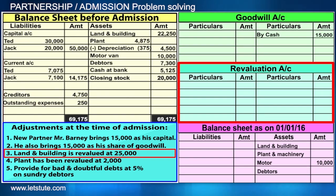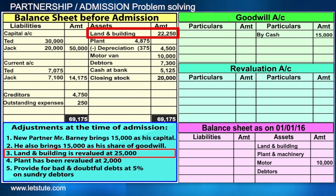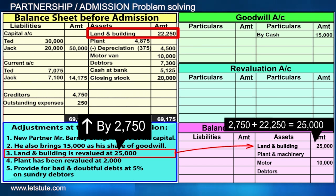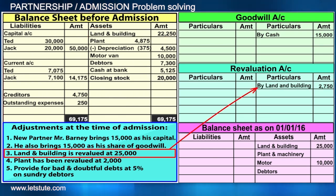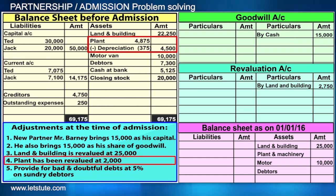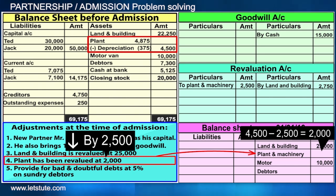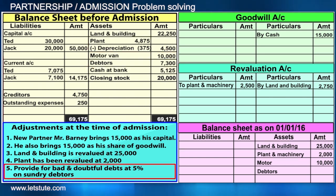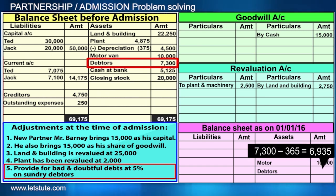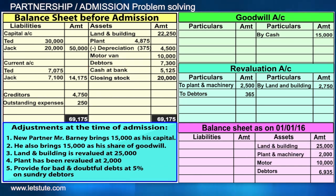Next, revaluation of assets and liabilities is done by opening a revaluation account. Land and building has been revalued — when asset value increases, we add it to the asset in the balance sheet and credit it in the revaluation account. Plant and machinery value is decreasing, so we debit the revaluation account and deduct from the asset. There are also bad debts of 5% of the debtors — a decrease in value, so we debit the revaluation account and subtract from debtors. Now we close the revaluation account, and the profit or loss on revaluation is transferred to the old partners' current account.